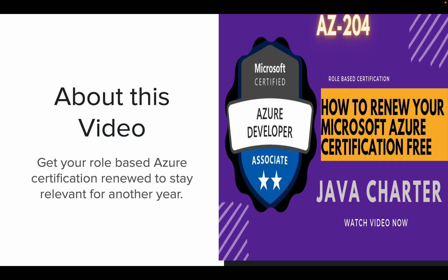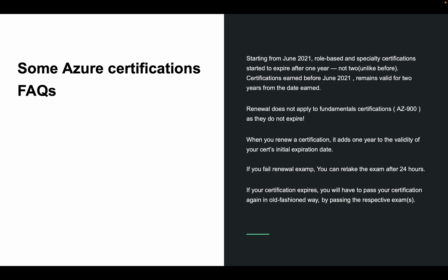Before I start, let's check some FAQs. Starting from June 2021, role-based and specialty certifications started to expire after one year, unlike the previous two-year expiration. Certifications earned before June 2021 remain valid for two years from the date earned.